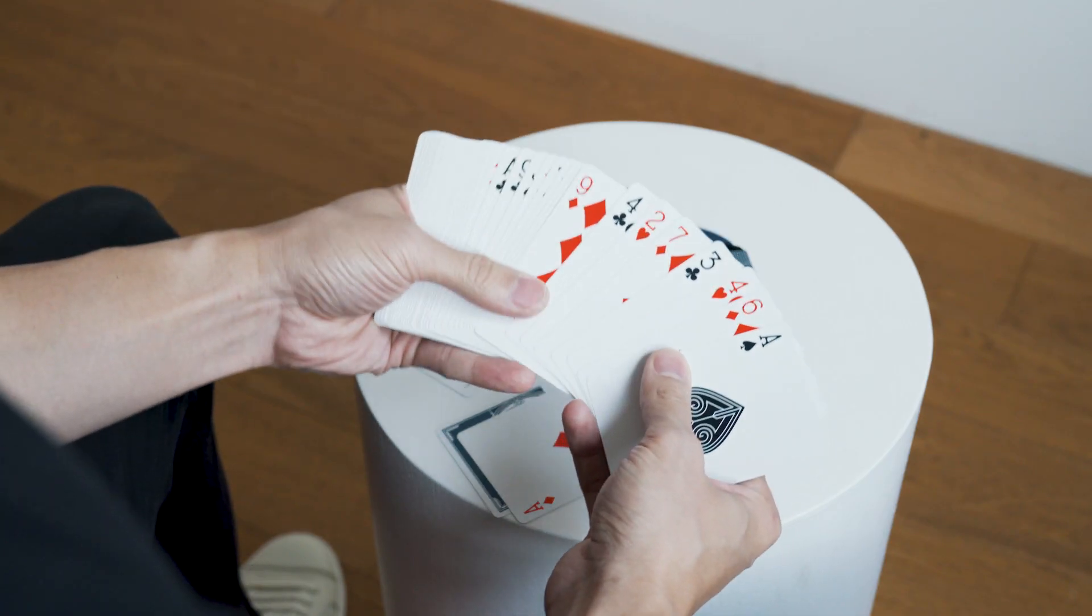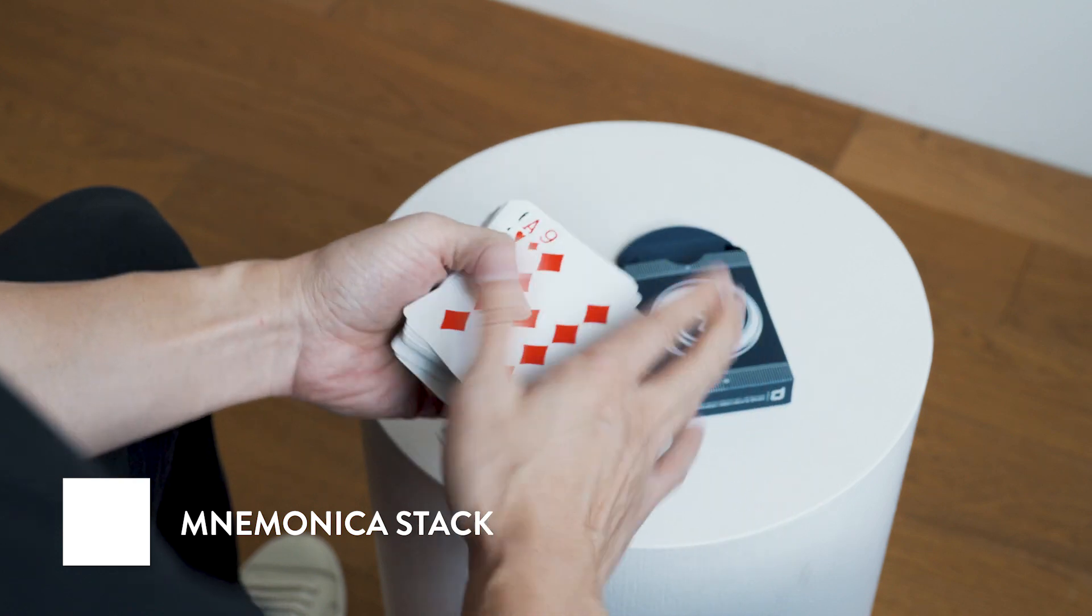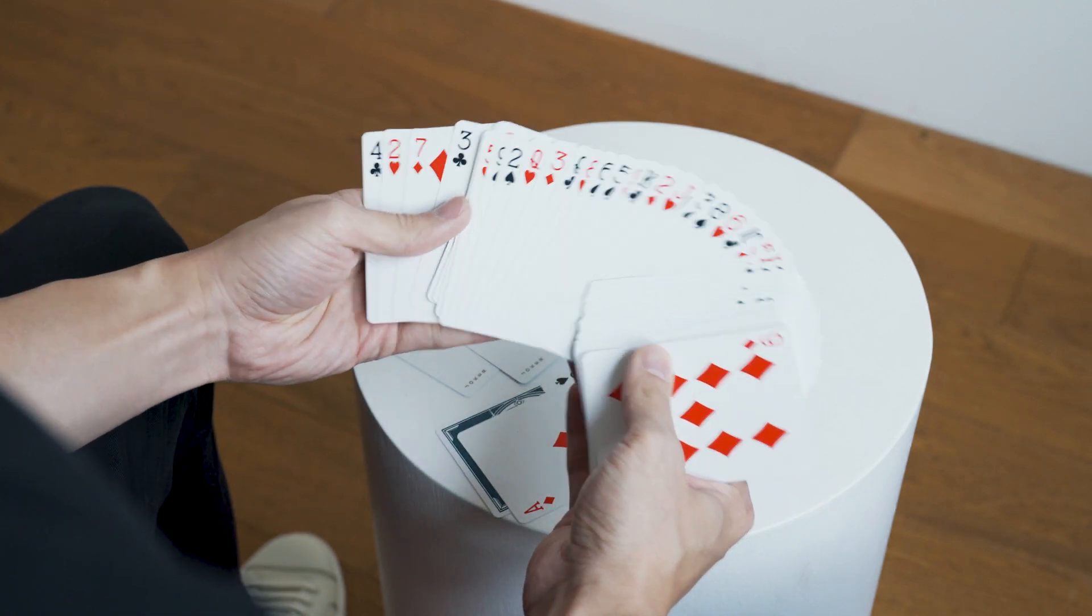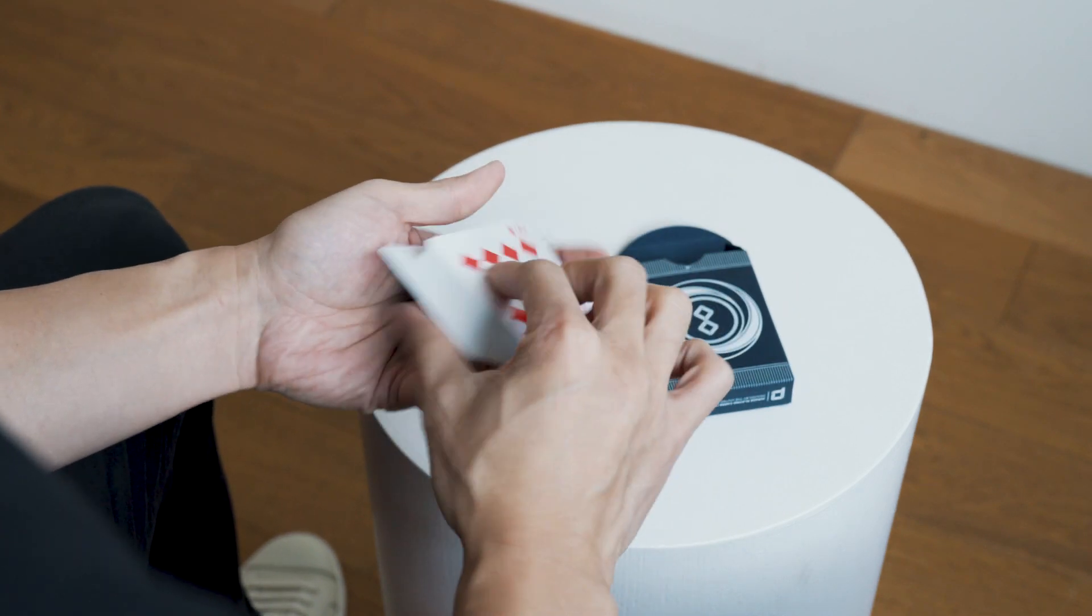You've probably noticed that the order of the deck is a little bit out of order. The four of clubs, if you just cut everything to the top, you'll notice that this is in Juan Tamariz's Mnemonica stack. That way you can perform magic using this right away out of the box without having to set it up.